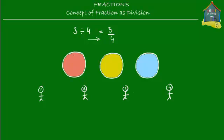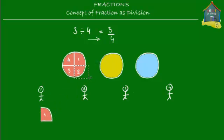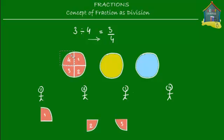Let's start with the first pizza. If this one pizza is to be divided among 4 friends, how much will each friend get? We divide the pizza into 4 pieces, so obviously each friend gets 1 piece — 1 slice per friend. This slice goes to friend number 1, this one to friend number 2, this one to friend number 3, and this one to friend number 4. Let's take each of these slices and put them under each of the friends.